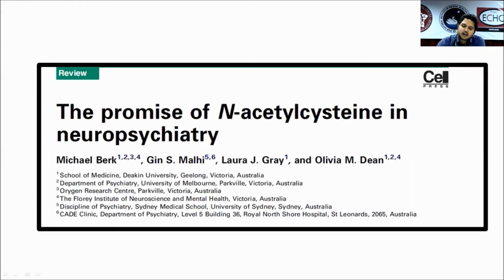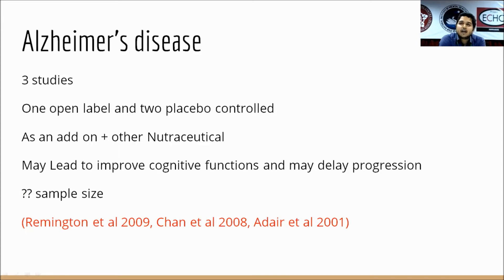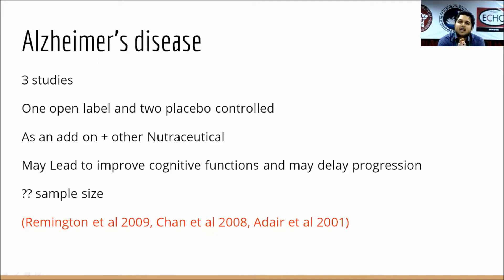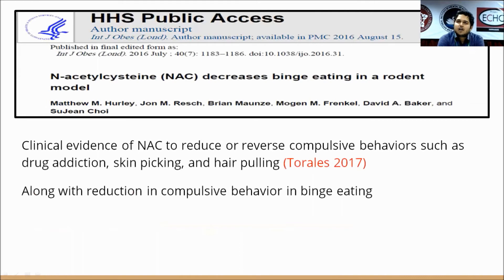Briefly on other areas of psychiatry: in Alzheimer's disease, around three studies looked at addition of N-acetylcysteine — one open-label and two placebo-controlled — as add-on to existing medications, combined with folate, B12, and other nutraceuticals, for mild-to-moderate or moderate-to-severe Alzheimer's disease. Some studies have shown improvement in cognitive function and possible delay of disease progression. However, the sample sizes are very small and how far these results can be generalized is questionable.